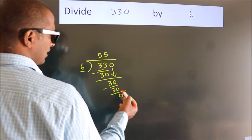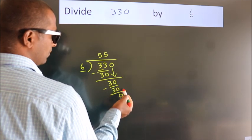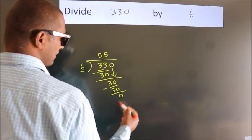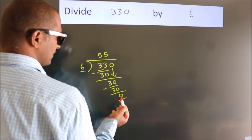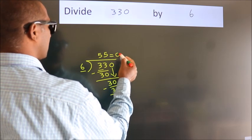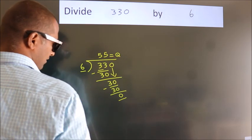After this, no more numbers to bring it down. And we got remainder 0. So, this is our quotient. Do we understand? Thank you.